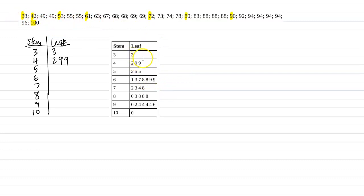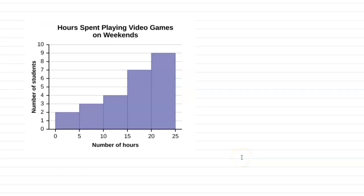You can tell a lot of information from a stem and leaf plot. Now let's look at histograms. This is an example of a histogram. I'm not going to discuss how to create one, but we'll pull information from it. First, some definitions: there's something called classes. The number of classes is determined by how many bars there are — notice there are one, two, three, four, five bars — so there are five classes.